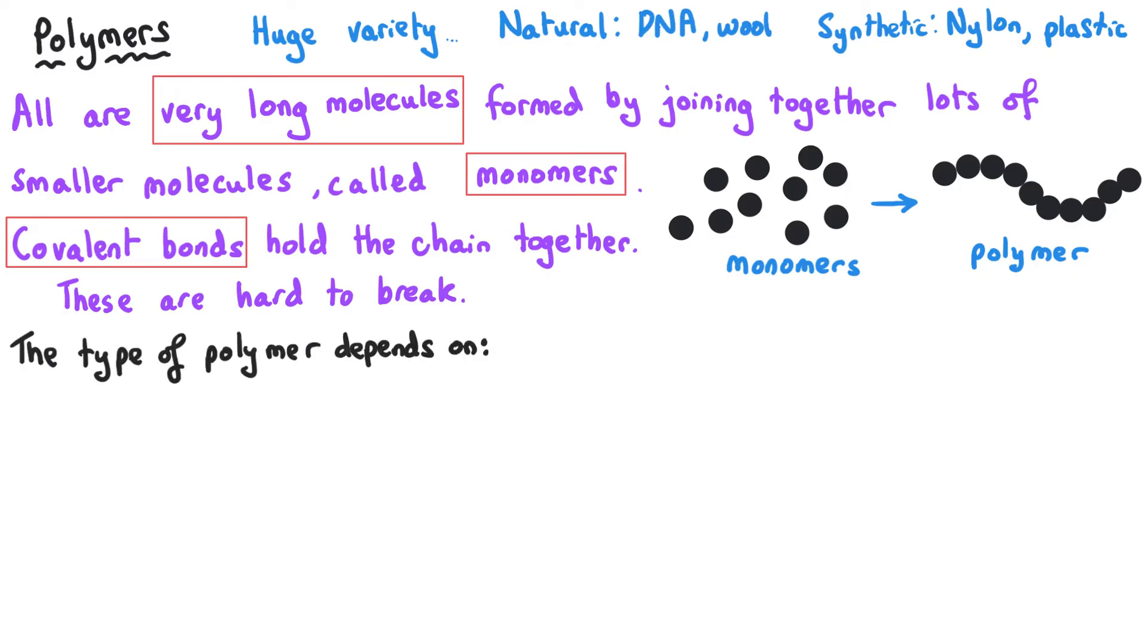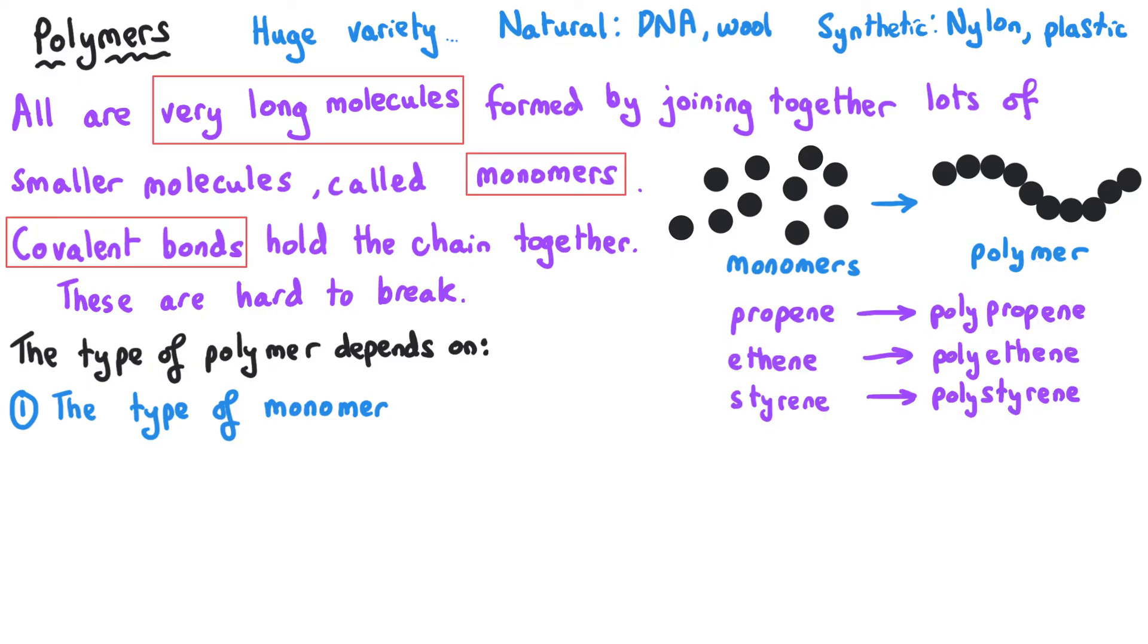The huge variety of different polymers comes from two sources. Firstly, the selection of the monomer that you use to make the polymer. It makes sense that if you use a different monomer, a different building material to make that polymer chain, then the polymer that you produce will be different, and so it will have different properties. Something that makes a little bit less sense, it seems less obvious, but the conditions that you use during the polymerization process, that's the process of making the polymer, can also have a big impact on the properties that the polymer will have.